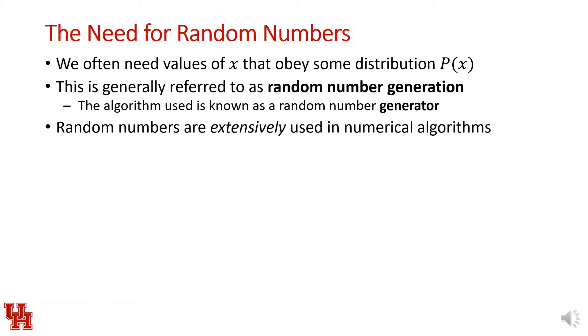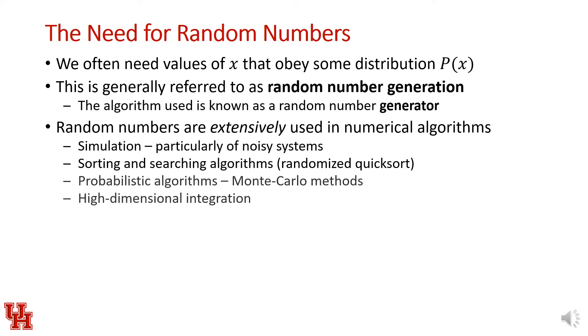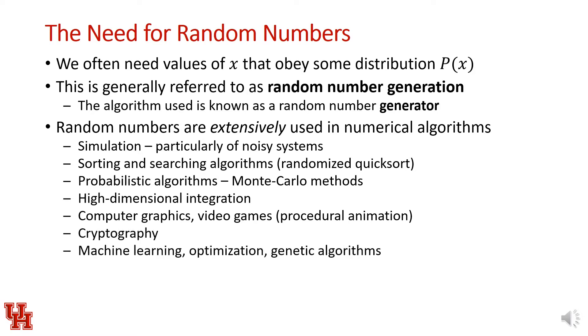Random number generators are extensively used in numerical methods, but also a variety of computational techniques: simulation, particularly of systems that exhibit some sort of noise or unpredictable behavior; optimized searching and sorting algorithms; probabilistic algorithms like Monte Carlo methods; high dimensional integration; computer graphics and video games for procedural animation; cryptography; and machine learning and optimization techniques, particularly genetic algorithms.